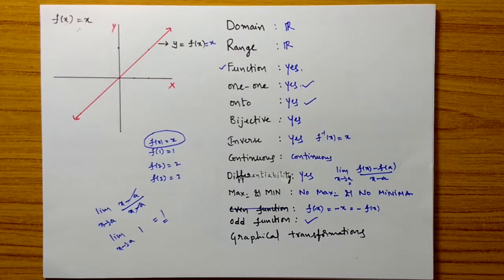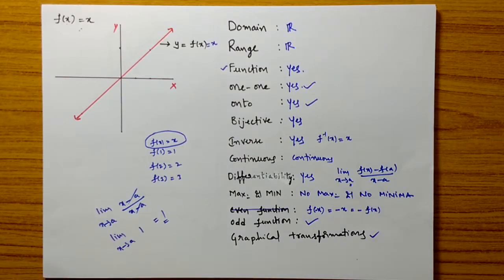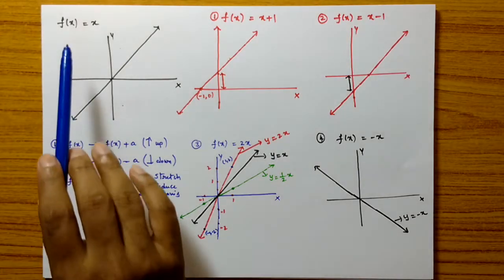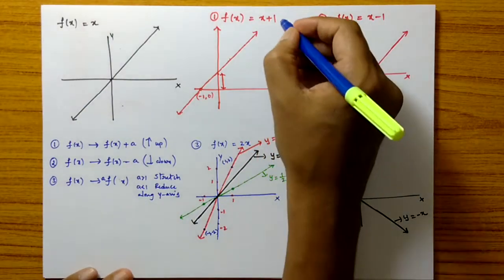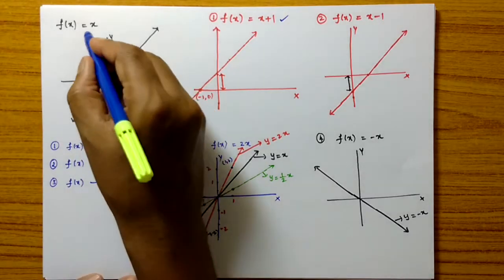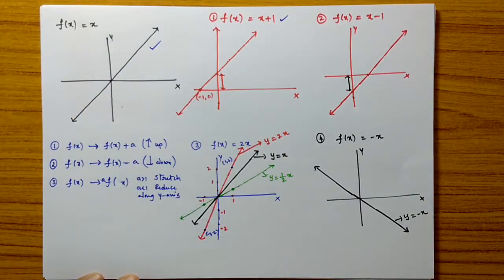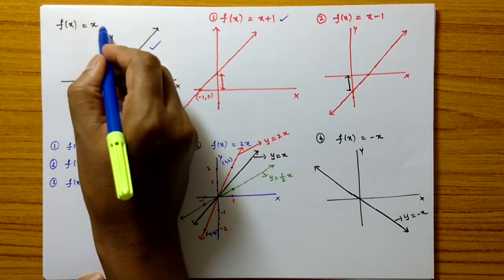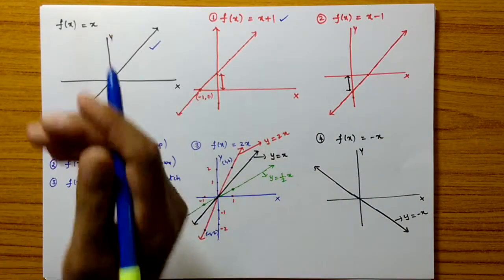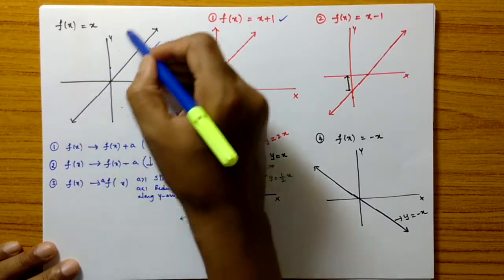These are the properties useful to solve problems quickly in JEE Advanced and JEE Main examinations. Now we will discuss graphical transformations — how the graph transforms. For f of x equals x, when we consider f of x plus 1, adding 1 to the function moves this graph 1 unit in the upward direction.